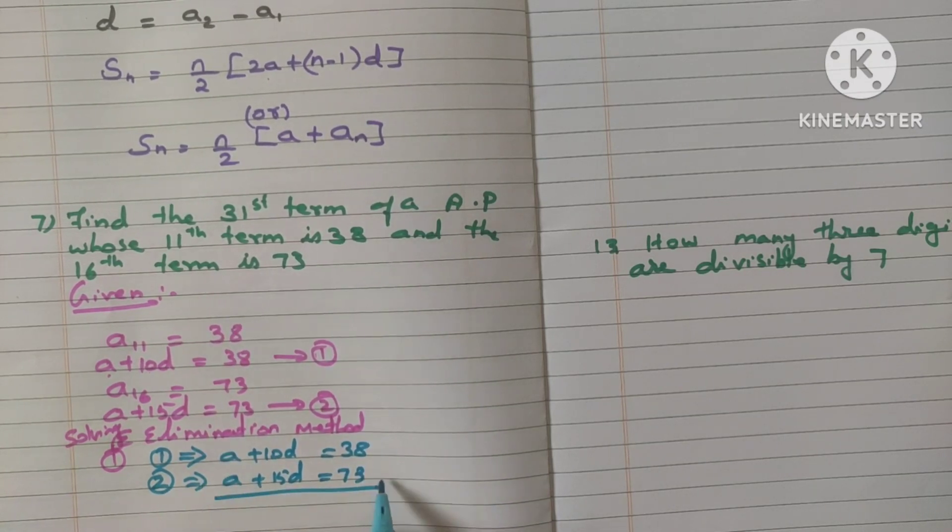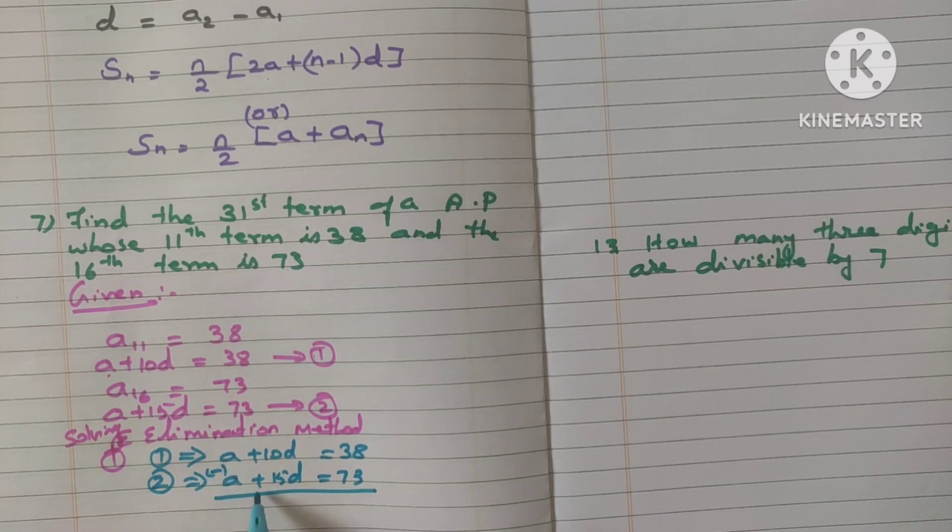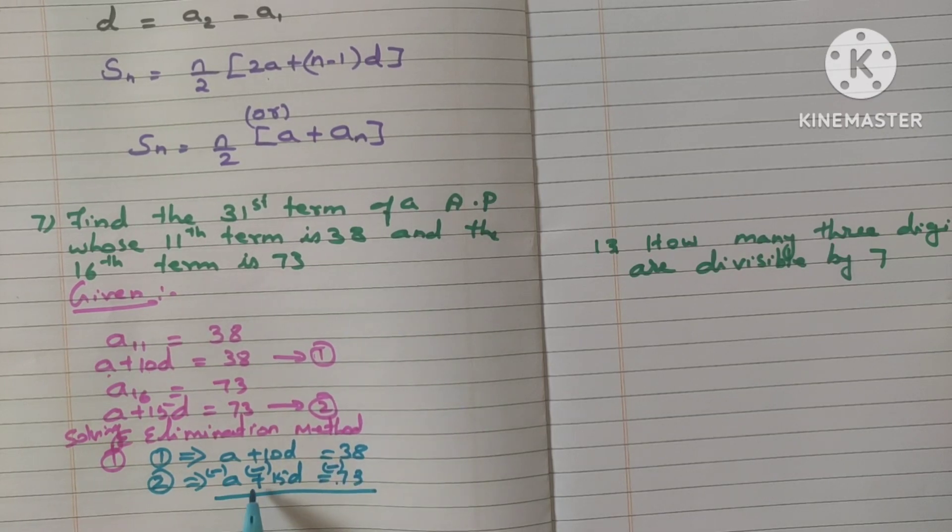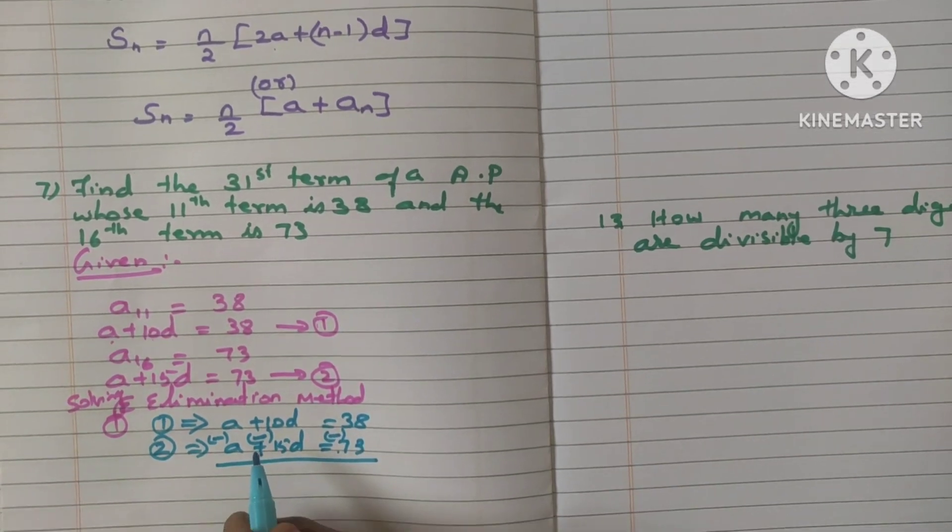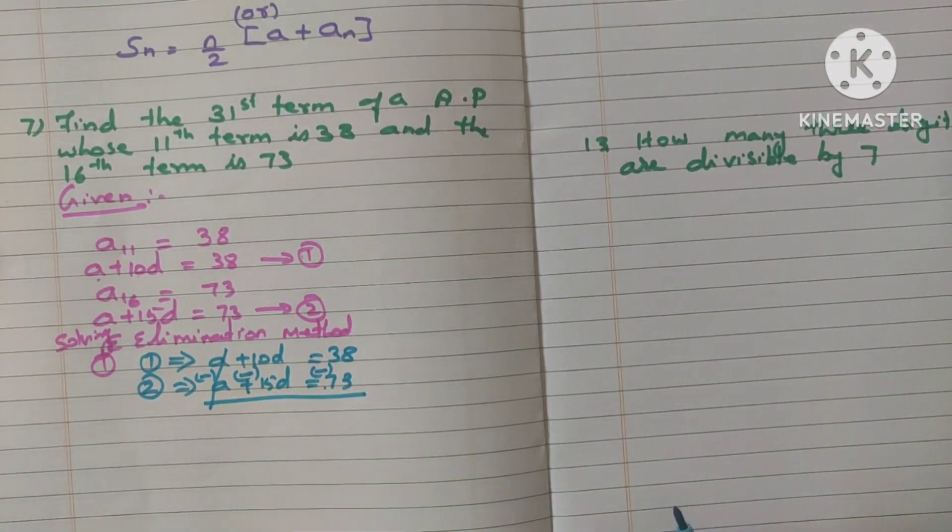Now change the sign of the second equation. See here this is positive sign, so change it as minus. This is also positive, change it as minus. This is also positive, change it as minus. If it is negative, you should change it as positive. Is it clear?